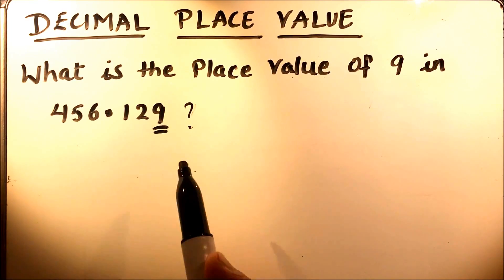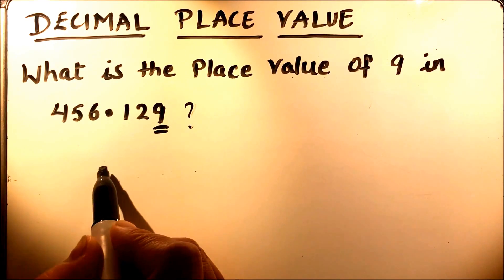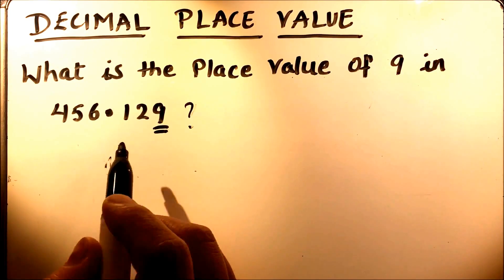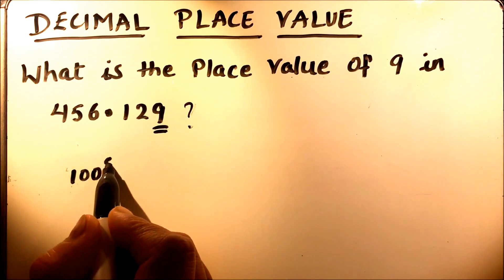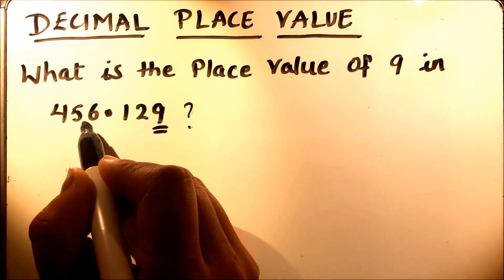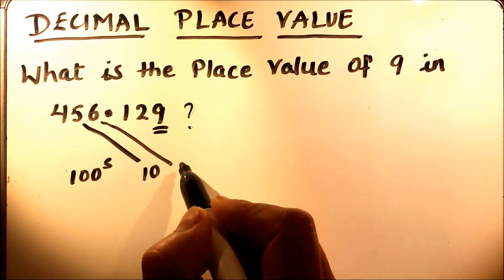So we all know that place value of these numbers: 4 is in the hundreds place, this is the hundreds digit, then 5 is the tens digit and 6 is the ones digit.